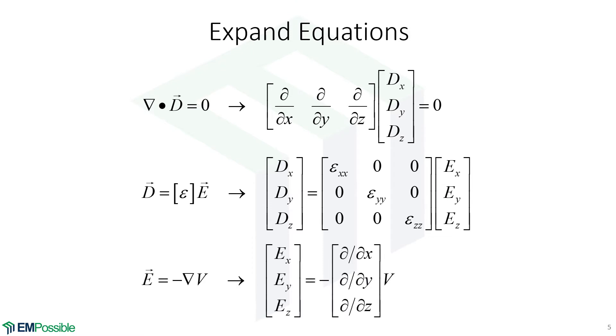The electric field is related to the electric potential. We have our electric field in a column vector, our derivatives in a column vector multiplying the electric potential, and the negative sign, which enforces the sign convention where our electric fields point from high voltage to low voltage.